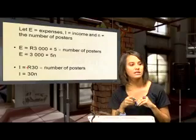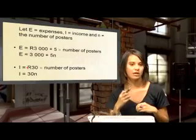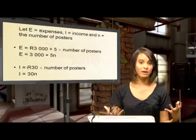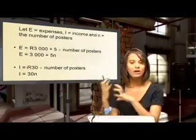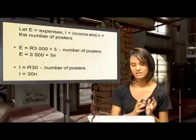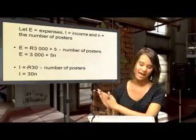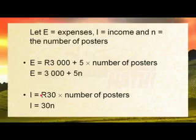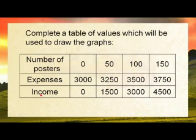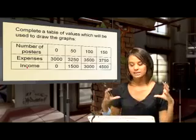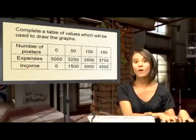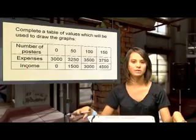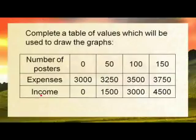His income is 30 rand for every poster he creates. Since we don't know how many posters he's made, we create an equation: I = 30n. After working out the equations, you may get a graph that you need to fill in — knowing your equations makes it simple to substitute values into the graph.